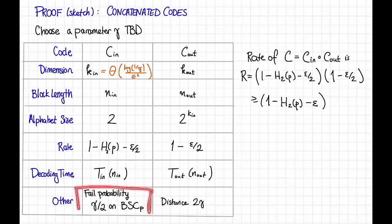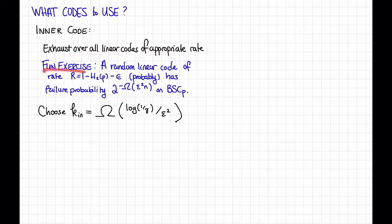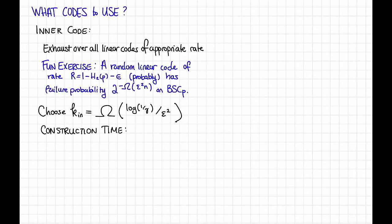So let's add k_in = Theta(log(1/gamma) / epsilon²) to our big table, which ensures the required failure probability. Back to this slide: the construction time for the inner code is 2 to the big O of n_in squared, because we need to search over all possible generator matrices. Since n_in is big O of k_in, and k_in depends on gamma and epsilon, the construction time in terms of those parameters is 2 to the big O of log²(1/gamma) / epsilon⁴.